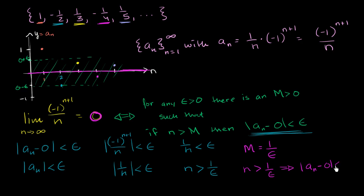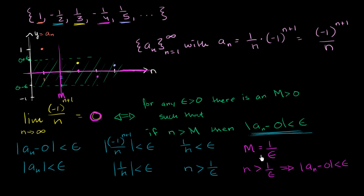So the limit does definitely exist. For this particular sequence, you give me any epsilon, and I'm going to set M to be 1 over epsilon. If N is greater than M, which is 1 over epsilon, then we know the distance condition is going to be true. For this particular epsilon, it looks like we picked 0.5. So as long as N is greater than 1 over one-half, which is 2, my M is right over here. You can see the sequence is within the bounds for any N greater than 2 — for N equals 3, 4, 5, and it keeps going. We've proven it: you give me any epsilon, I set M equal to 1 over epsilon, and for N greater than that, this is going to be true. This sequence converges to 0.